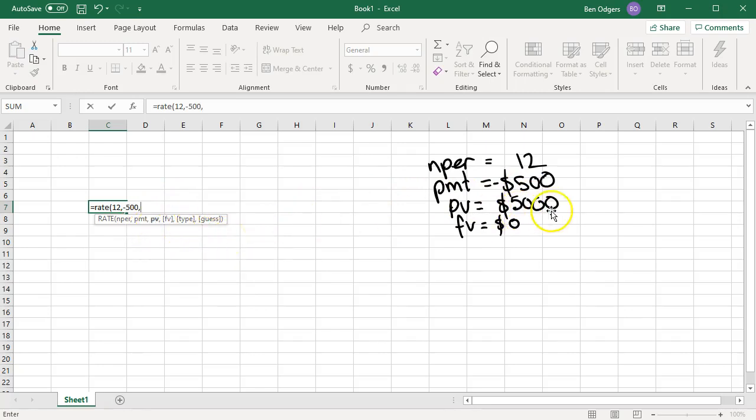comma, our present value, which is $5,000, which is a positive amount, comma, our future value is 0, comma, our type is 0, it's at the end of the time period. And for our guess we're just going to leave it blank, and close it off with brackets,